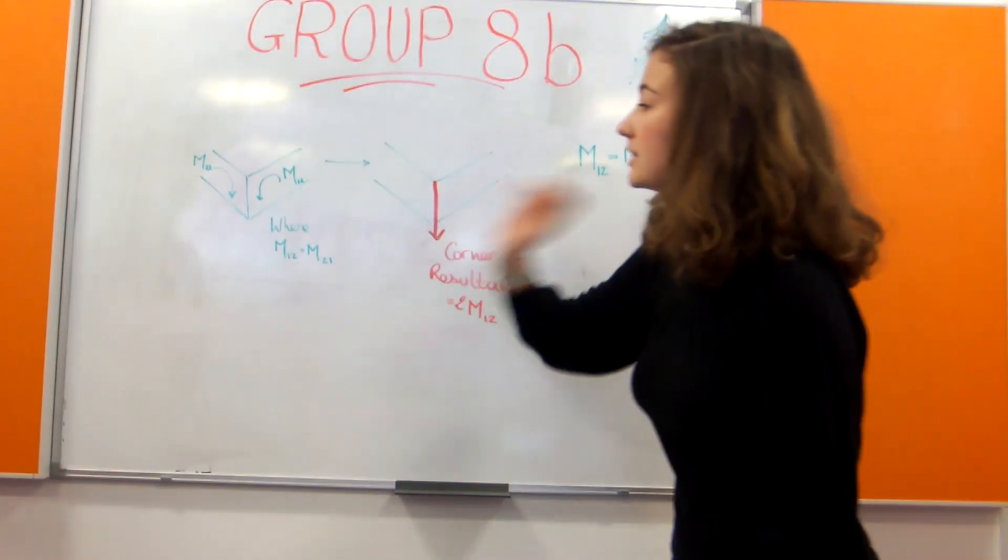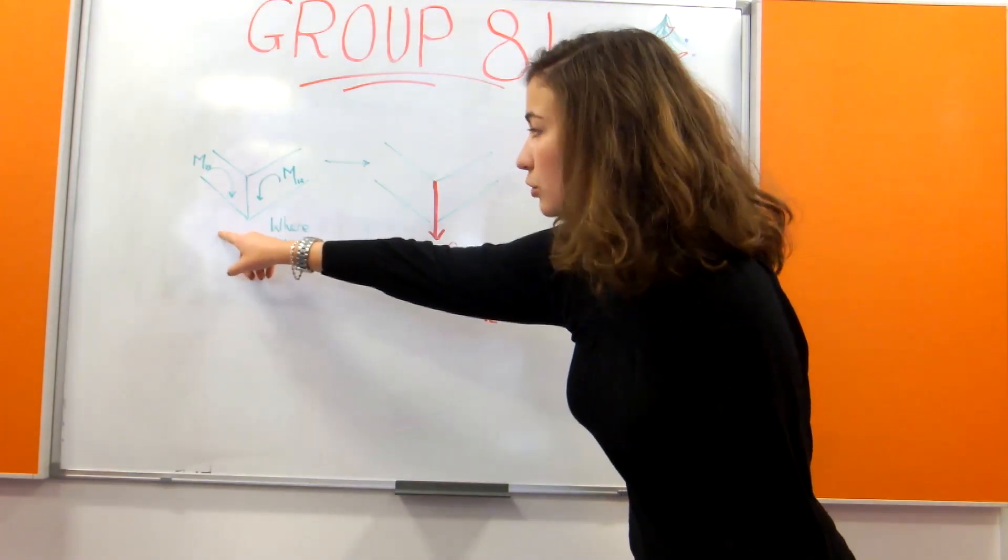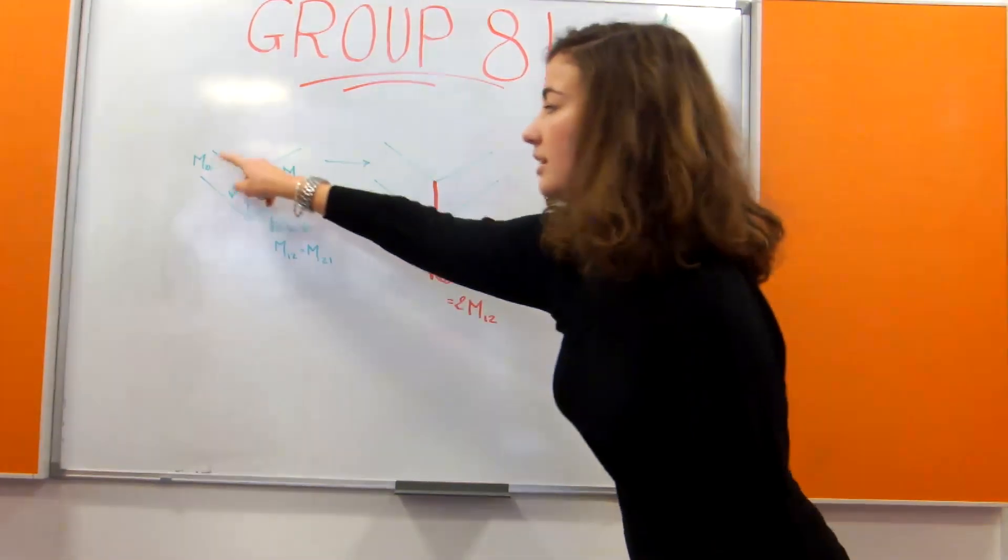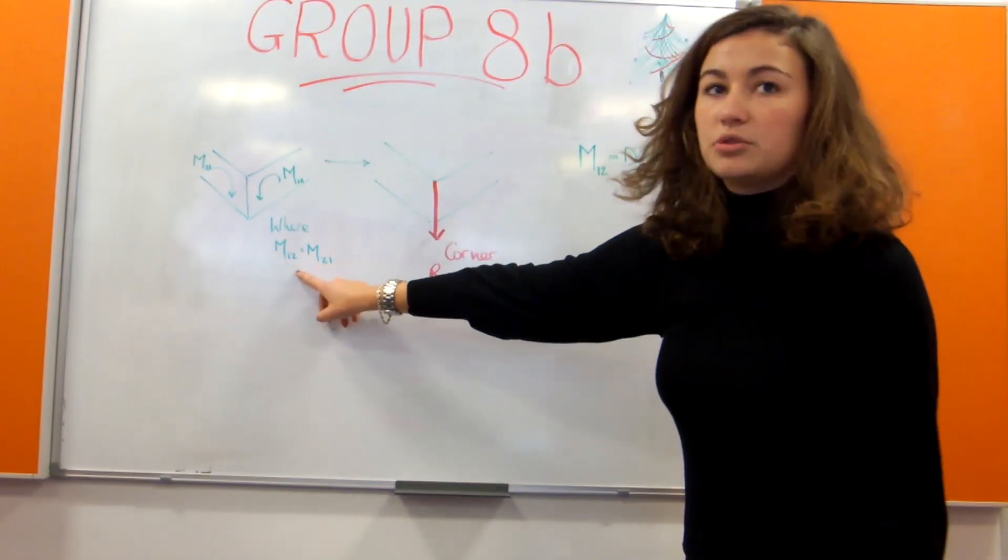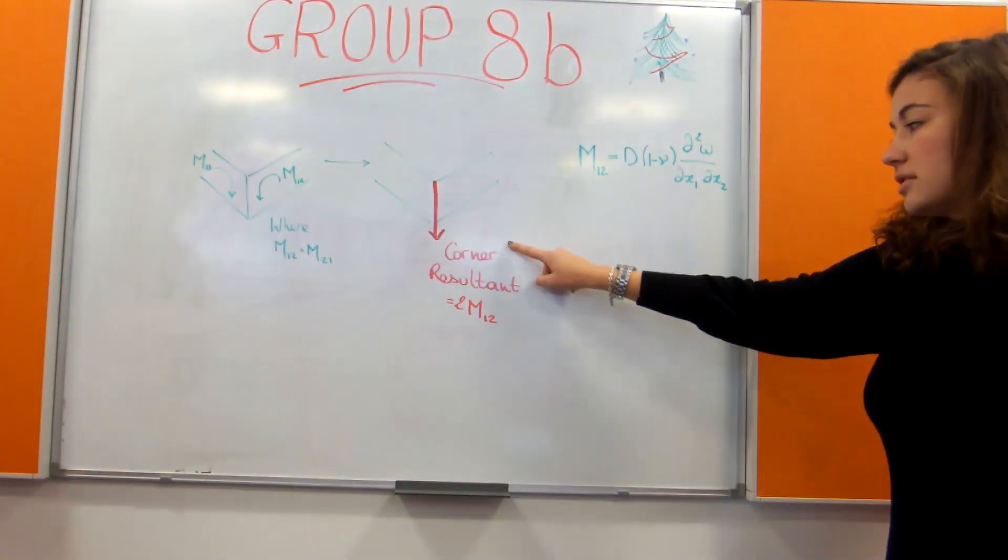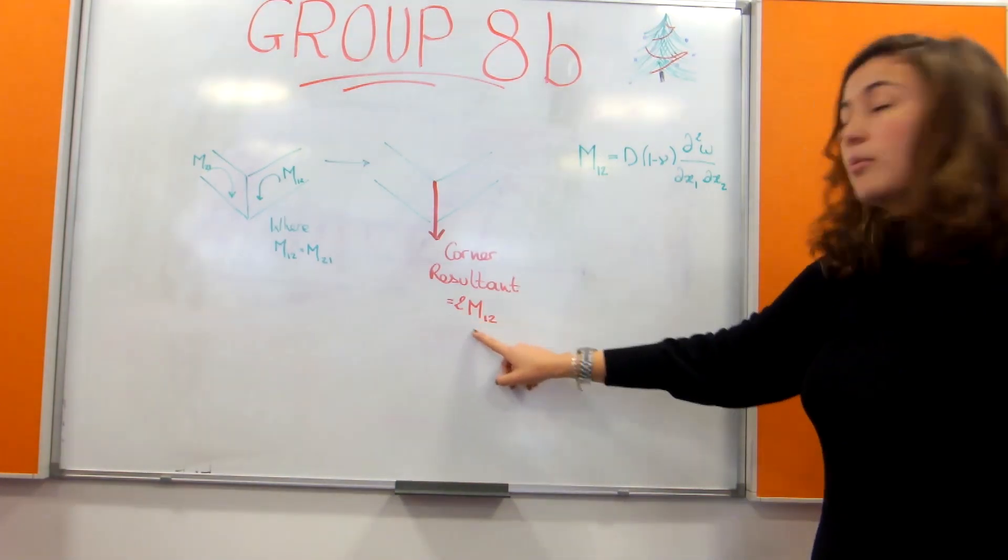However, we can see there that the twisting moment on the corner is acting on both sides, and m1, m2 is equal to m21. Therefore, the corner resistance is going to be equal to 2m12.